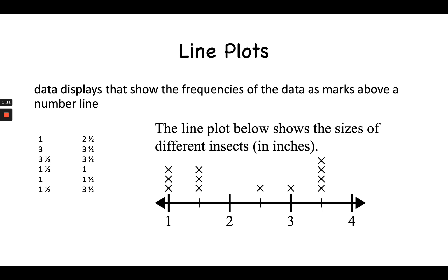If I look at the two on my number line, I don't have any X's there, which means none of our insects measured two inches. Looking all the way down toward the end of the number line at three and one-half, I see the most common measurement — four X's above three and one-half, meaning four insects measured three and one-half inches.